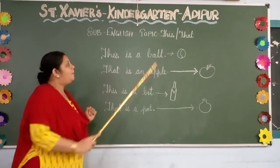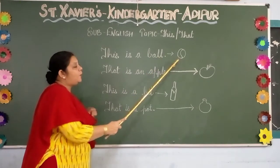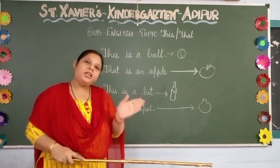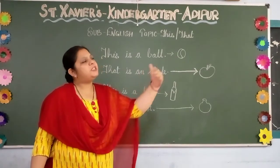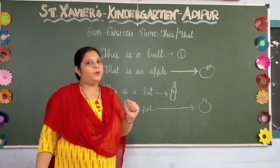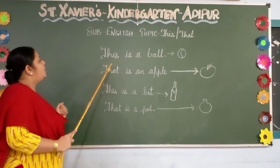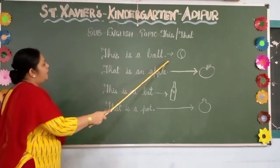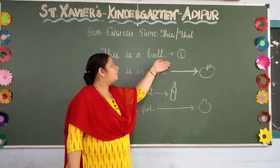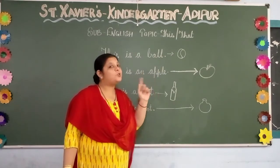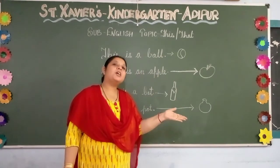This is a ball. When the sentence is completing and the object is very nearby, you say 'this.' When the object is far from you, you say 'that.' So this is a ball — you can see the ball is near, the object is near, so you say 'this.' This is a ball.